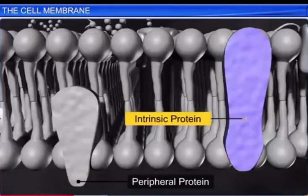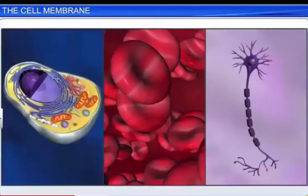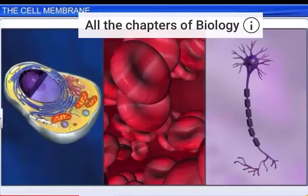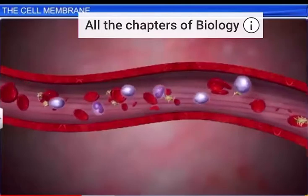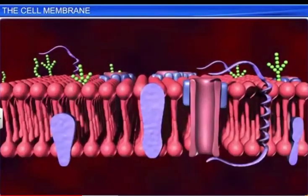Scientists also deduced that the ratio of proteins to lipids varies greatly between different types of cells. For instance, the cell membrane of red blood cells is 52% proteins and 40% lipids.